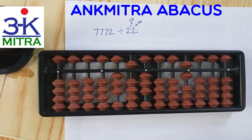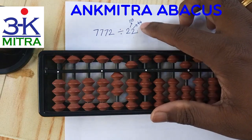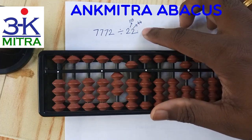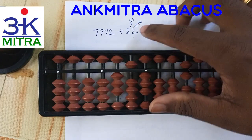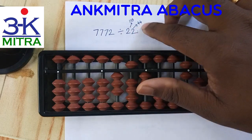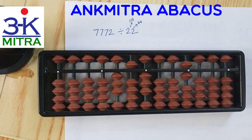I demonstrated both methods — one where the student is aware of the table of 22, and one where they are not. In the case where the student doesn't know the table of 22 by heart, they need to have at least the values of 2 times and 5 times ready in front of them. With those three reference numbers — 1 times, 2 times, and 5 times — the calculation can be done in fewer steps. I hope this helps, thank you.